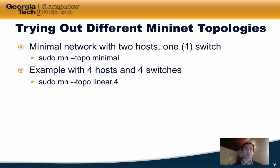As a second example, we can create a linear topology with four hosts and four switches. What this does is connect one host to each of the four switches, and then connects each of the switches together in a line — a linear-like topology.